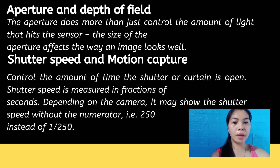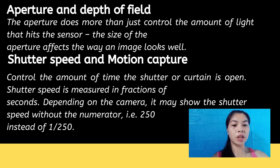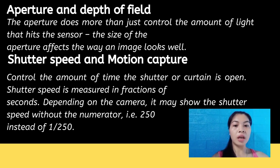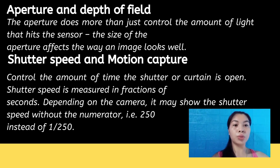Shutter speed controls the amount of time the shutter or curtain is open. It is measured in fractions of seconds. Depending on the camera, the shutter speed may be displayed without the numerator — for example, 250 instead of 1/250.